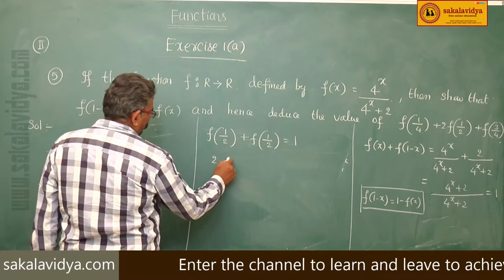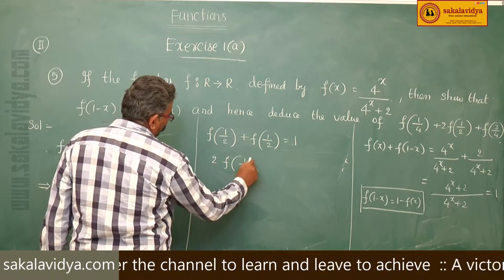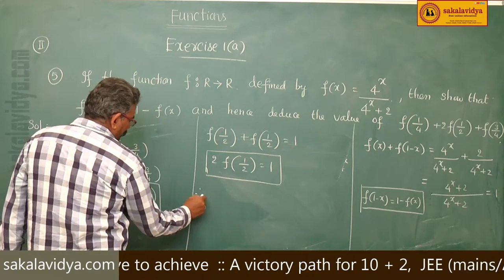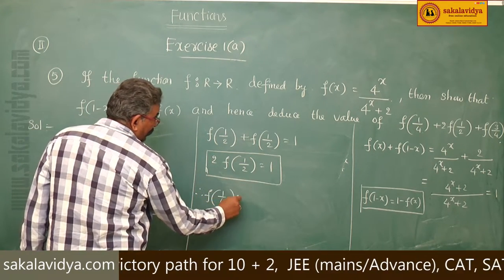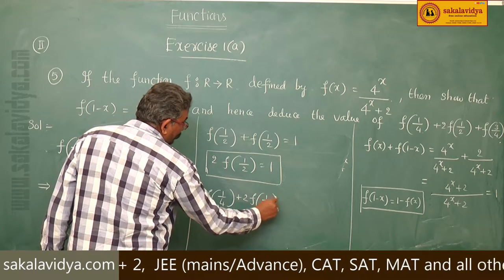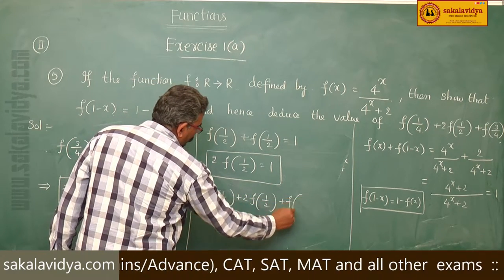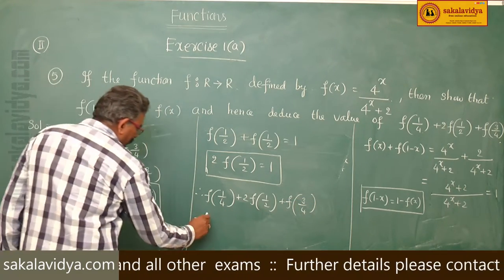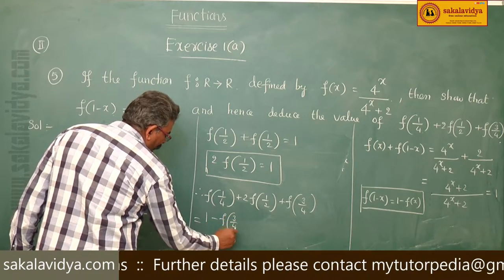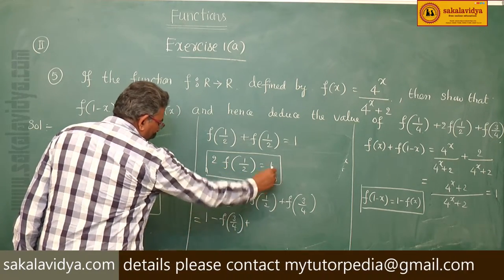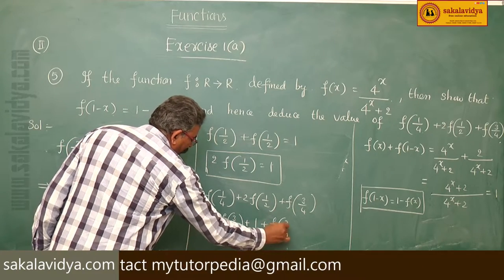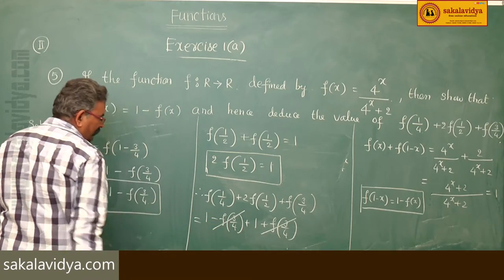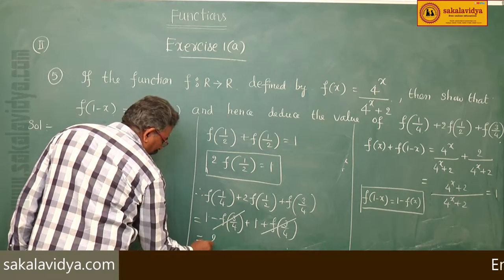So 2 f of 1 by 2 equals 1. Therefore, f of 1 by 4 plus 2 into f of 1 by 2 plus f of 3 by 4 equals 1 minus f of 3 by 4 plus 1 plus f of 3 by 4. The f of 3 by 4 terms cancel. We have 1 plus 1, which is equal to 2.